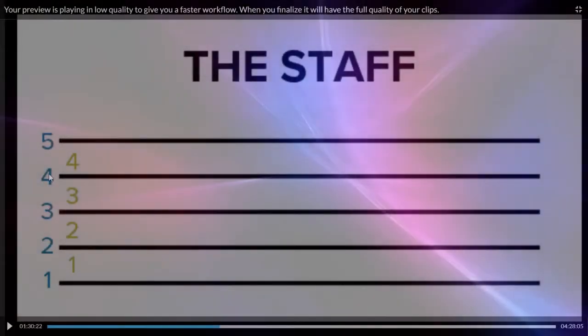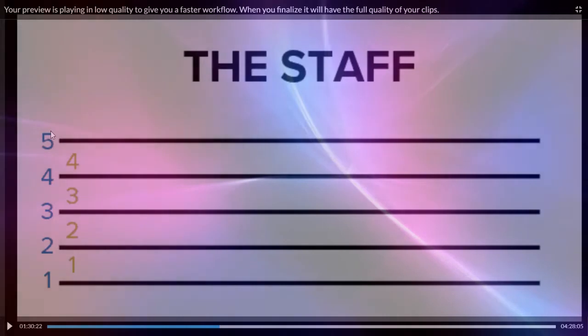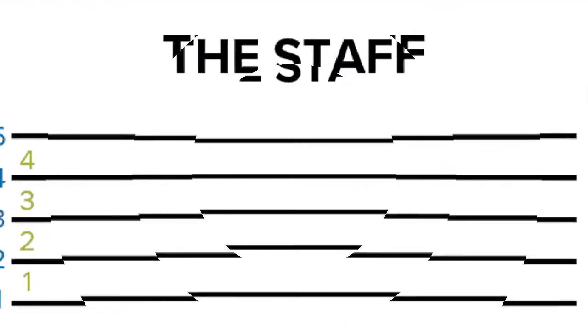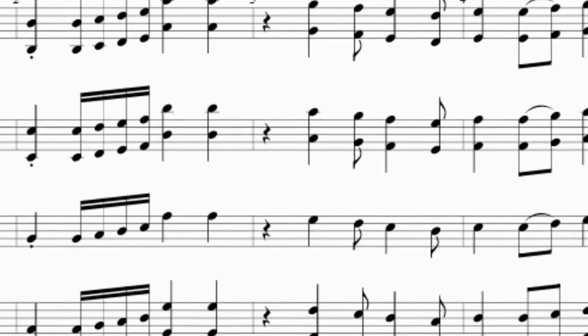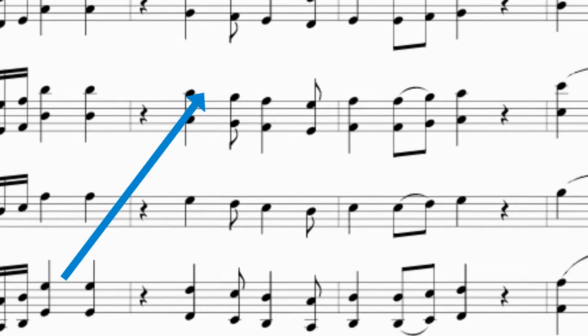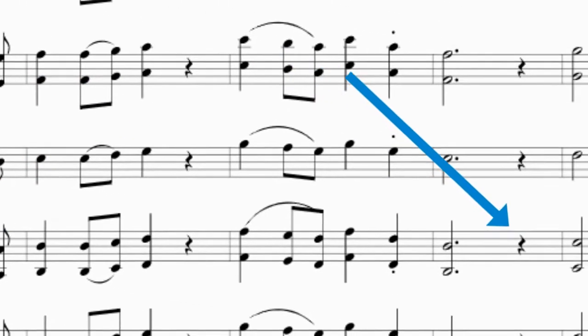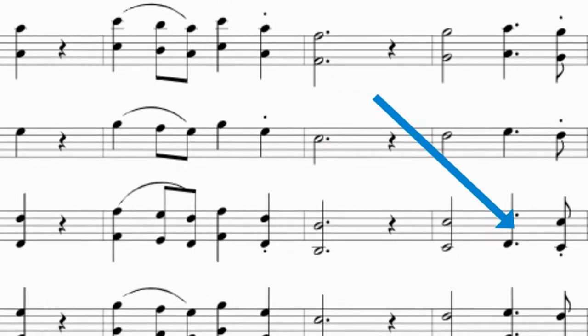The lines of the staff are numbered from bottom to top. The spaces between the lines are also numbered from bottom to top. If the notes appear higher on the staff, they sound higher in pitch. If the notes appear lower on the staff, they sound lower in pitch.